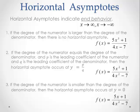The first case: if the degree of the numerator is larger than the degree of the denominator, there is no horizontal asymptote. Looking at the example, the term with the highest exponent in the numerator has degree 3, and the term with the largest exponent in the denominator has degree 1. Since 3 is larger than 1, we say there is no horizontal asymptote — abbreviated as HA.